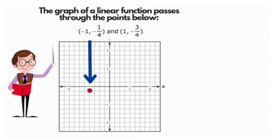So our first point is negative 1, negative 1 fourth. That point will be right there in quadrant 3.